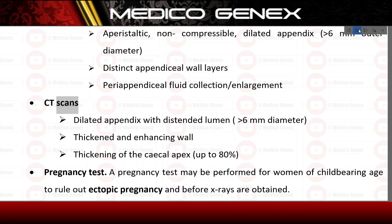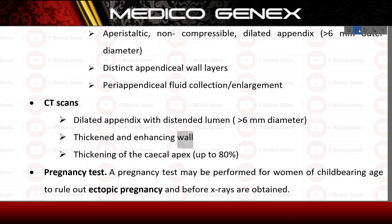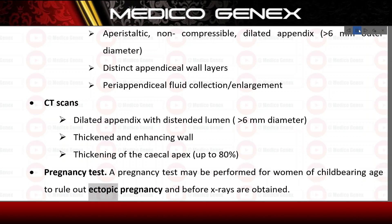CT scans: dilated appendix with distended lumen, 6 mm diameter; thickened and enhancing wall; thickening of the cecal apex, up to 80%. Pregnancy test: a pregnancy test may be performed for women of childbearing age to rule out ectopic pregnancy and before X-rays are obtained.